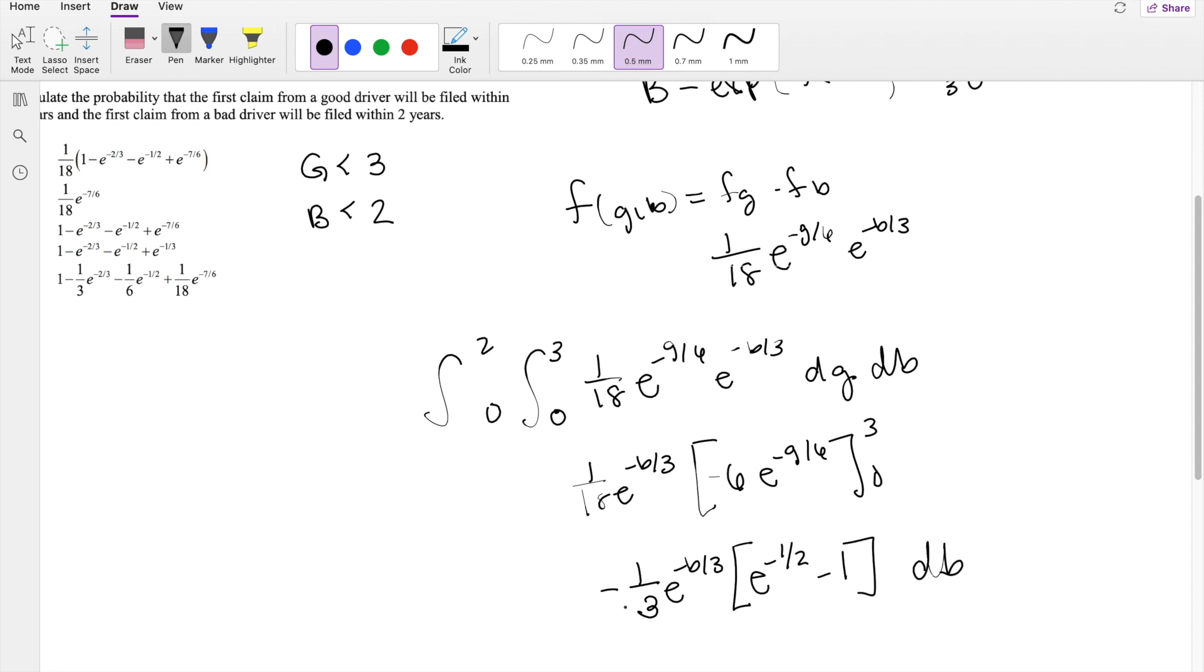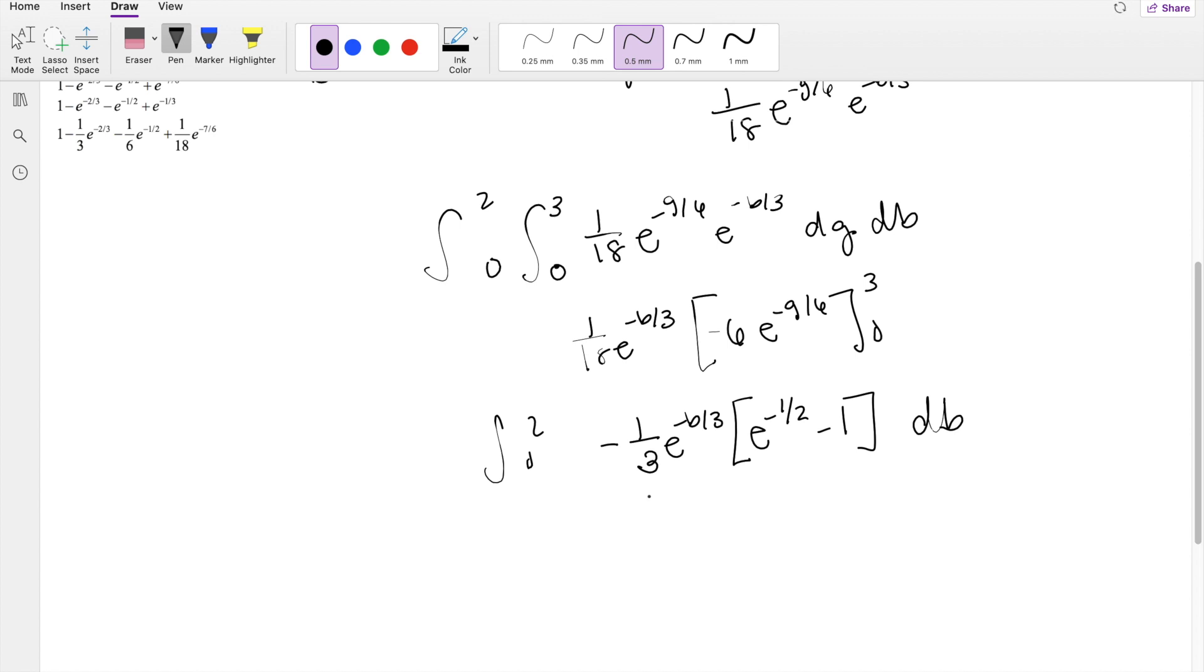And then the outer integral still stays the same, 0 to 2. So I'm going to plug that in, you get negative 1 third, e to the negative b third, e to the negative 1 half, plus 1 third, e to the negative b third. And we're integrating with respect to db, 0 to 2.